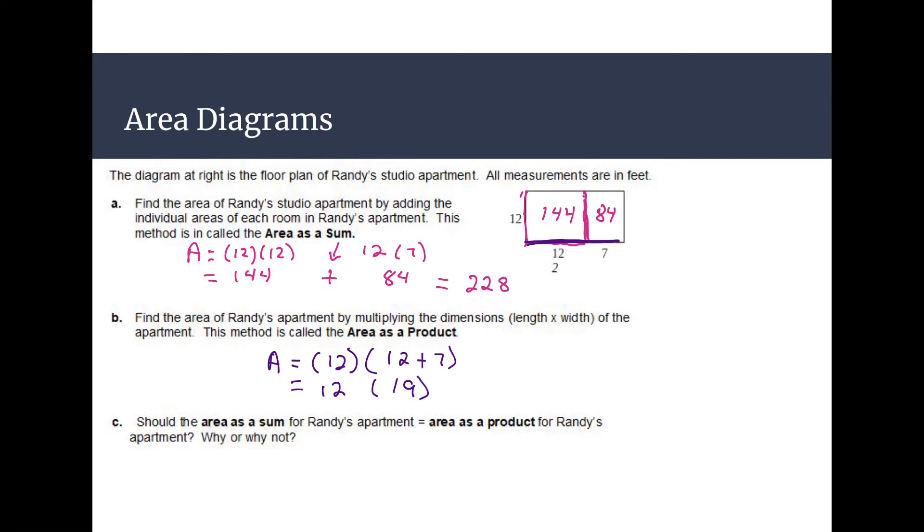Then I can do 12 and then 12 plus 7 that gives me 19. And we call this area as a product because now my last step here is to multiply. So we're going to multiply 12 times 19 for a total of 228. Once again it does say measurements are in feet so we'll label these as feet squared. And last question, so area as a sum we got the answer of 228. And area as a product we got 228.